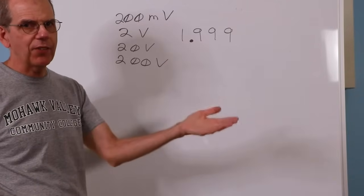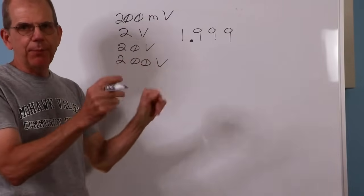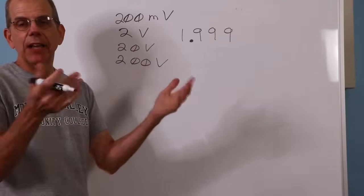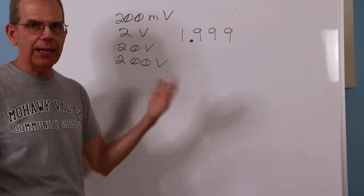So we have 1.999 volts as the maximum value that the meter can show. If you put a voltage in that's larger than that, you put in 5 volts, the display will maybe flash, it might say error, it might say overload, something like that to indicate the value's too big.